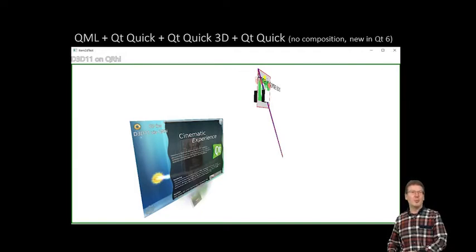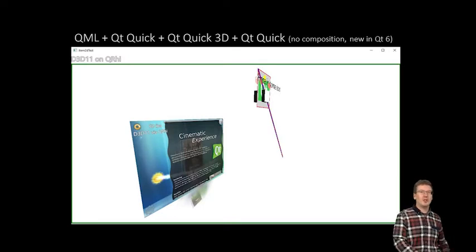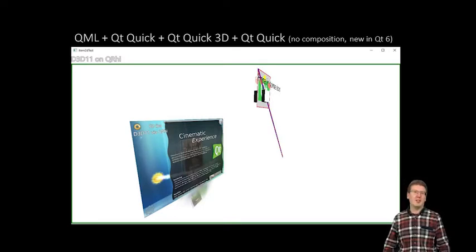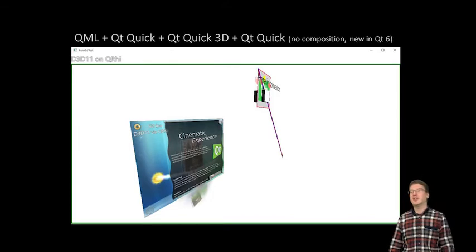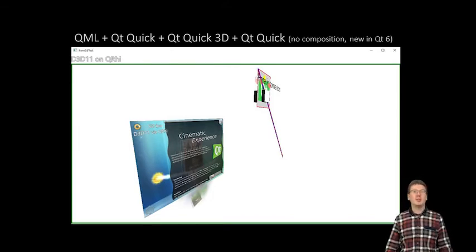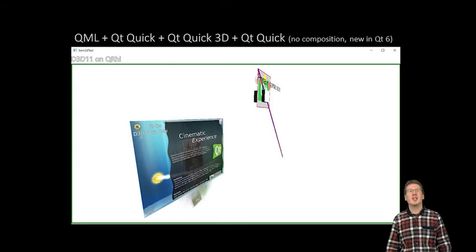This is not composition-based — we don't render everything to textures and then draw texture quads. The 2D and 3D stuff can get rendered in a single render path, which is of course great news, especially for embedded users with lower-powered embedded devices.